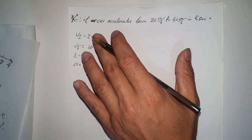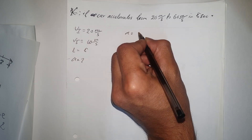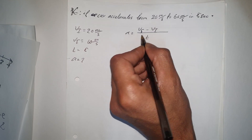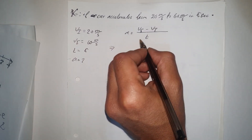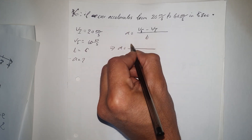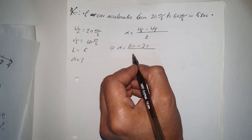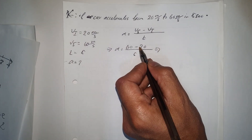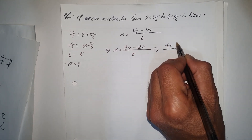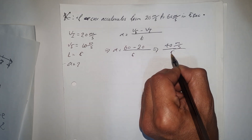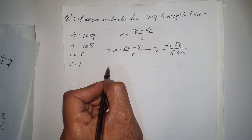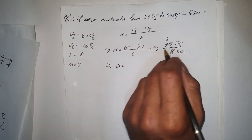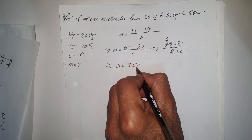Using the formula: acceleration = (final velocity − initial velocity) / time = (60 − 20) / 5 = 40 / 5 = 8 miles per hour per second. So the acceleration is 8 mph/s.